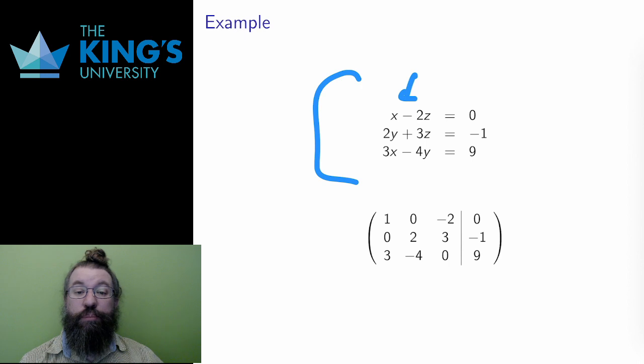If a variable is missing, then the constant for that variable must be 0. So I transfer 1, 0, -2, and 0 for the first row.